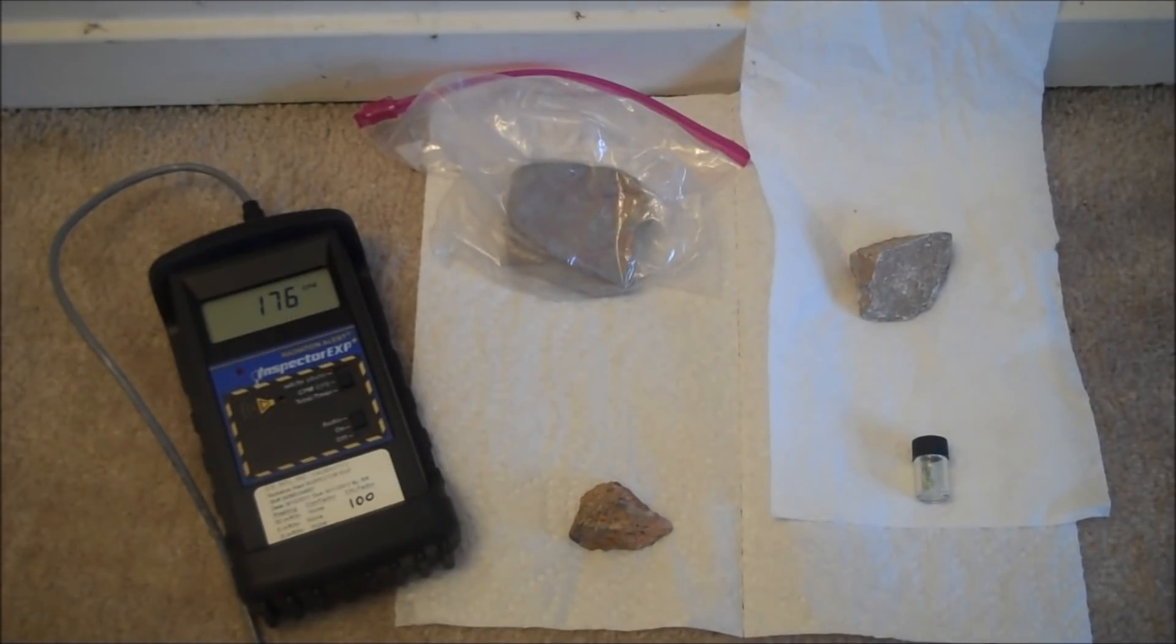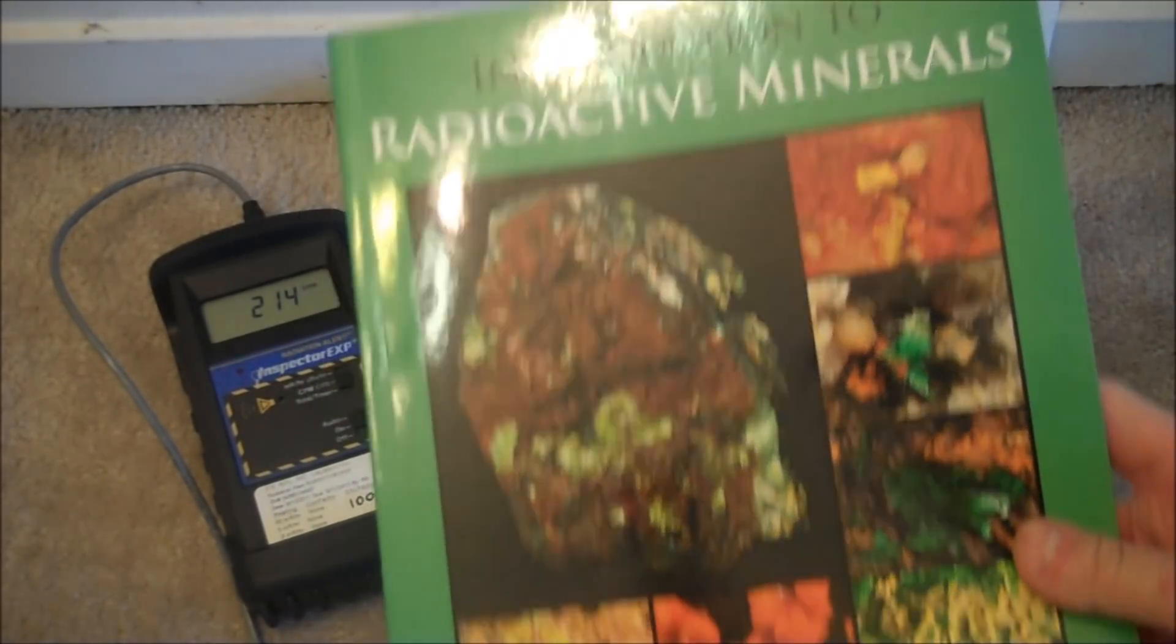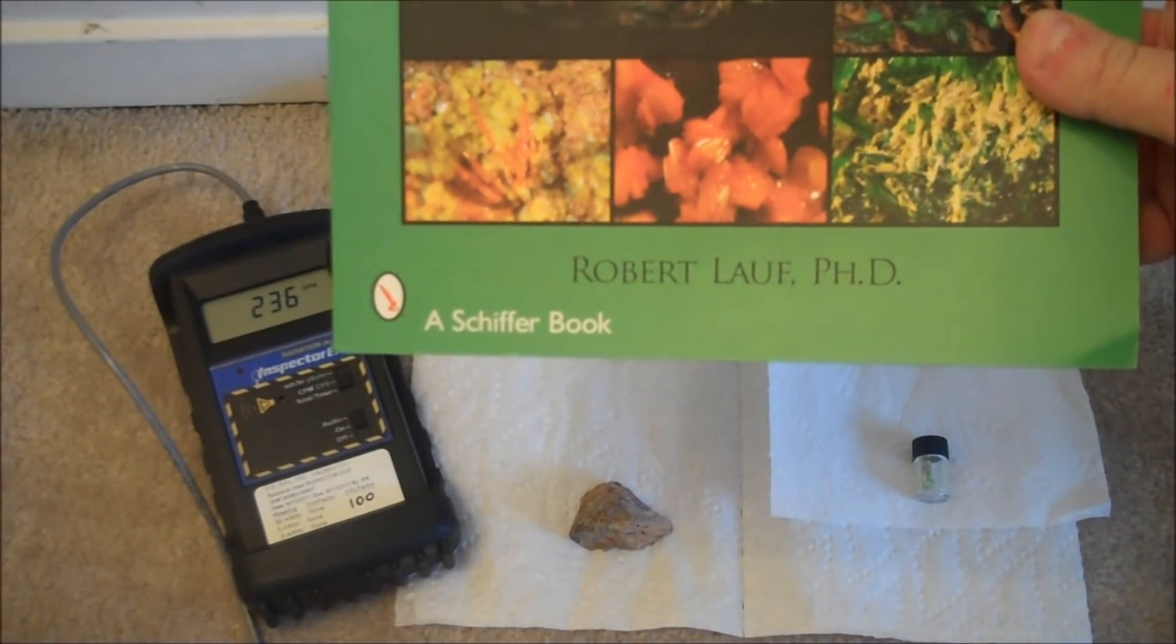Natural uranium comes in many different types and many different shapes. To understand more about natural radiation, it's important to buy yourself a decent book, like this guy right here, The Introduction to Radioactive Minerals, by Robert Loeff, PhD.